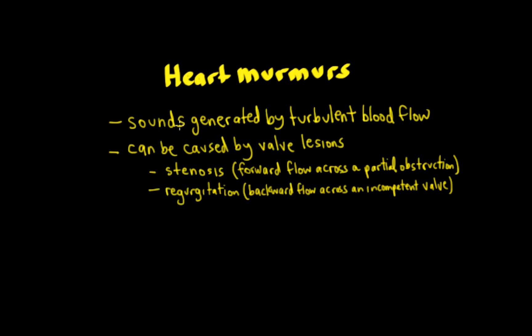Murmurs are sounds generated by turbulent blood flow. Normally, flow is laminar. The types of murmurs we're focusing on are caused by valvular lesions. Valvular lesions include stenosis, where there's a narrowing of the valve — forward flow across that narrowed, partially obstructed valve causes turbulent blood flow. The other possibility is a regurgitation murmur, where the valve is not closing properly. Backward flow across that incompetent valve also causes turbulent flow and the heart murmur. These are the two major types of heart murmurs we're going to focus on.